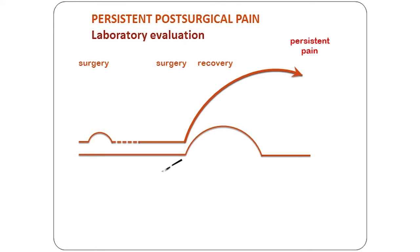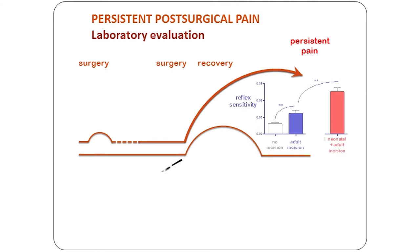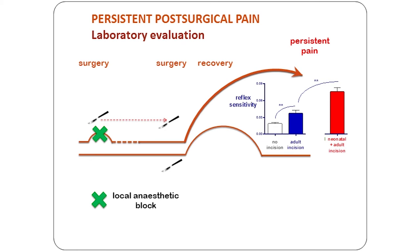To look at this more closely and understand the mechanisms, we need to go back to the science lab and look at a model there. If we do surgery in adulthood, we can see a clear increase in reflex sensitivity after surgery but it does improve and resolve. However, if the same group had also had surgery as neonates, there's not only a much greater hypersensitivity but it also lasts for longer — both the degree and duration are affected. Importantly, if we apply a local anaesthetic at the time of that initial surgery, we can actually prevent this long-term change, so they then behave exactly as if they didn't have that prior experience.